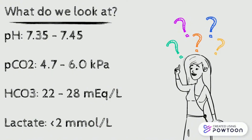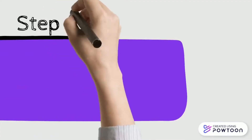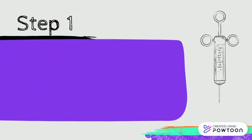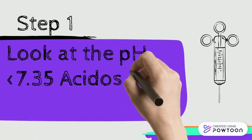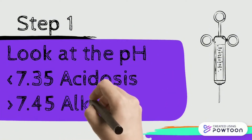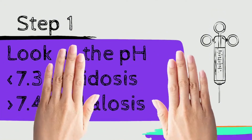The first step is looking at the pH. Simply put, if the pH is less than 7.35, it's acidosis. If it's more than 7.45, it's alkalosis.